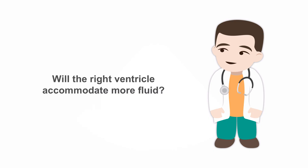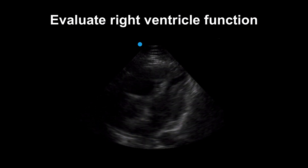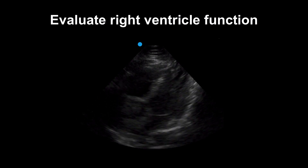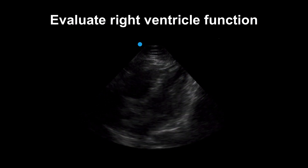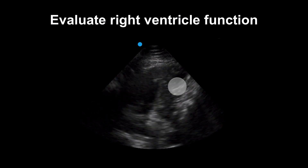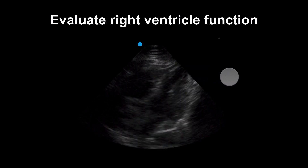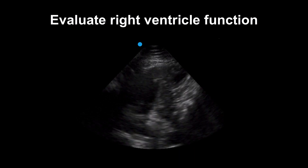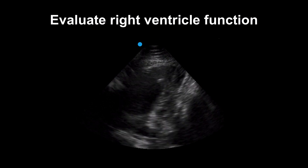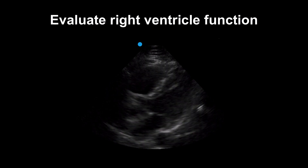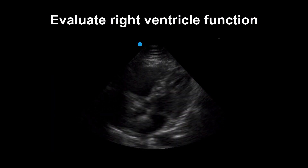With the right heart, we ask a different question: will the right ventricle accommodate more fluid? A patient with impaired right ventricular function or right ventricular overload may actually worsen if we give them fluid. In this example, there's an enlarged right ventricle with septal bowing — this patient was hypotensive from a saddle pulmonary embolus. The septal bowing is pushing into the left ventricle, worsening cardiac output. Giving more fluid risks exaggerating the septal bowing and further worsening hypotension.